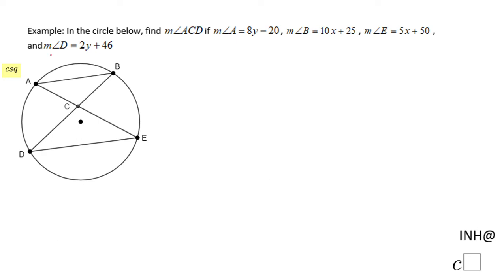Welcome, or welcome back. In this example, we need to find the measure of angle ACD. The measure of angle A is 8y minus 20, angle B is 10x plus 25, angle E is 5x plus 50, and angle D is 2y plus 46. Notice that angle A and angle D are marked the same, and angle B and angle E are marked the same.